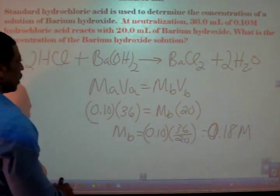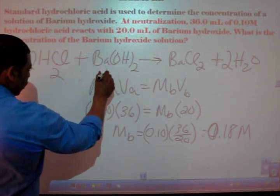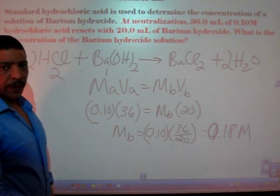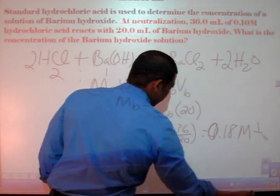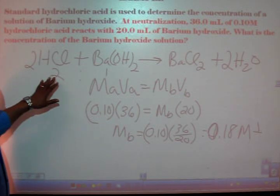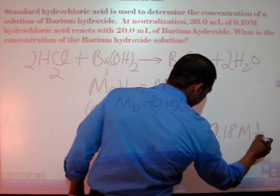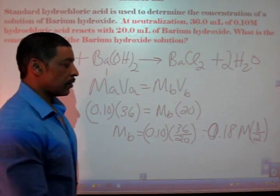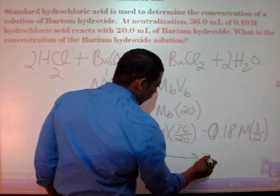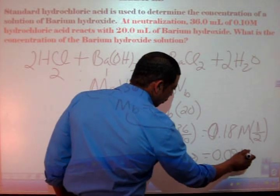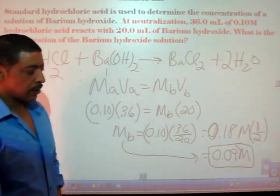Now we must adjust for the molar ratio of acid to base. In this case, for every 2 moles of acid, we require 1 mole of base. Therefore, a fraction must be generated where the 1 will be in the numerator of my fraction. And of course, the denominator will consist of the 2 associated with the acid. Multiplying 0.18 times 1 half gives me a molarity of base that is 0.09 molar. So my final answer is 0.09 molar.